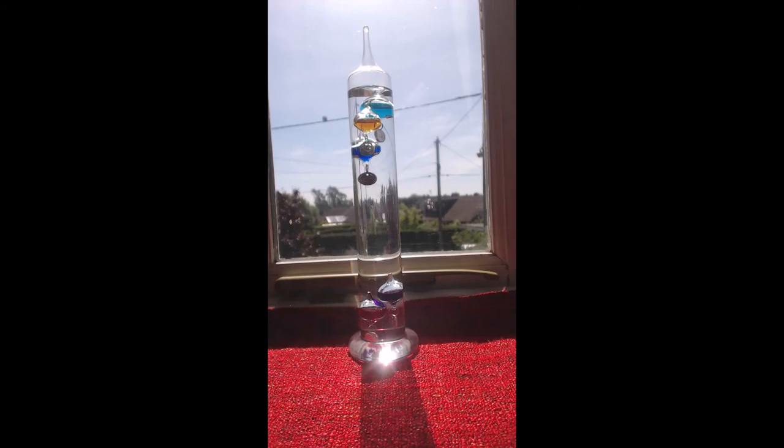Okay, so we've put our Galileo thermometer in sunshine now. There are two floats down at the bottom already. And the lowest of the ones at the top is labelled 22 degrees centigrade. So having sat it in the sun, I'm going to leave it for a while now to warm up.